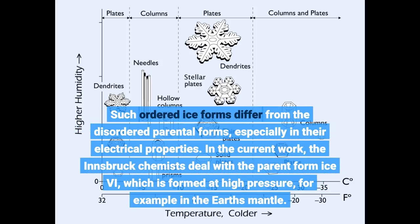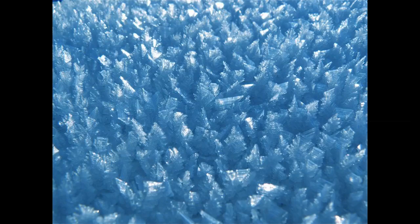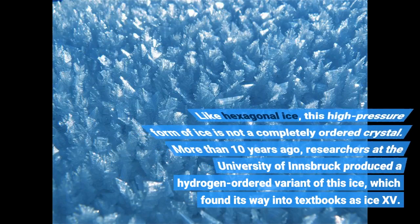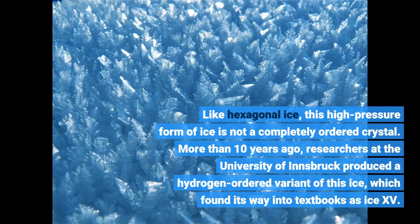In the current work, the Innsbruck chemists deal with the parent form ice V, which is formed at high pressure, for example in the Earth's mantle. Like hexagonal ice, this high-pressure form of ice is not a completely ordered crystal. More than 10 years ago, researchers at the University of Innsbruck produced a hydrogen-ordered variant of this ice, which found its way into textbooks as ice 15.